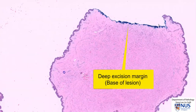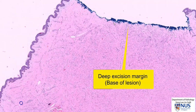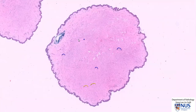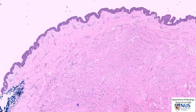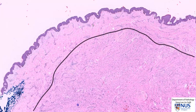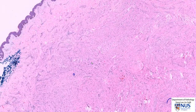This blue inked edge here is the deep margin of this lesion, and it is at the level of the dermis. This is not a well-encapsulated lesion with a fibrous capsule, but we can just make out the lesional area because it appears a little bit darker on low magnification when you compare it to the overlying dermis. This is because this lesion has a higher concentration of cells.